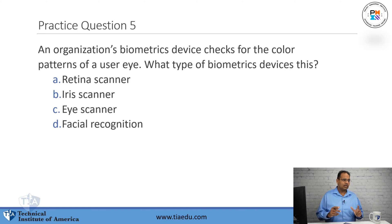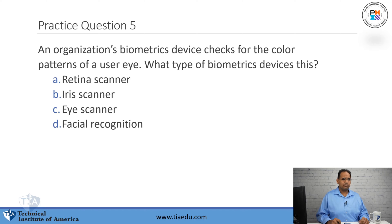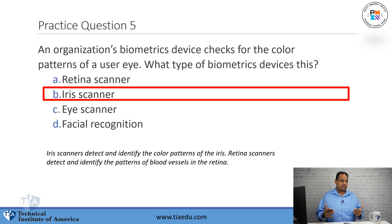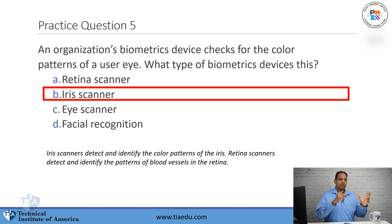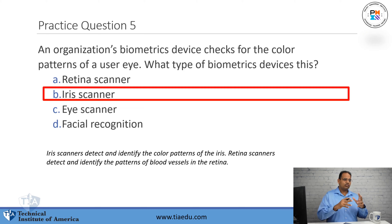Question five: an organization's biometric device checks for the color patterns of a user's eyes. What type of biometric device is this? Retina scanner, iris scanner, eye scanner, or facial recognition? The answer is an iris scanner. An iris scanner looks for the color patterns of the iris itself. Retina scanners — which a lot of people confuse with iris — look for the patterns of blood vessels in the retina. Remember: iris scanner looks for color, and retina looks for the patterns of blood vessels.